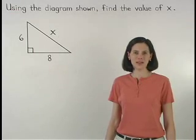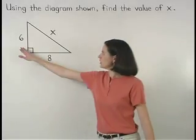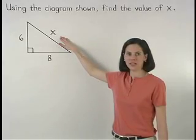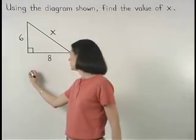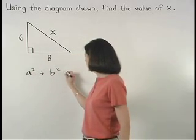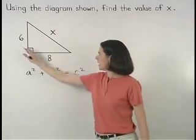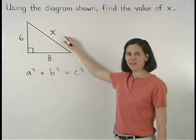The Pythagorean Theorem states that the sum of the squares of the lengths of the legs of a right triangle is equal to the square of the length of the hypotenuse, or a squared plus b squared equals c squared, where a and b are the legs of the right triangle and c is the hypotenuse.